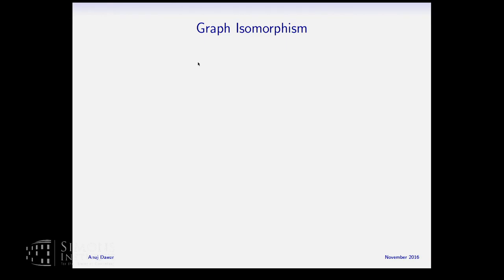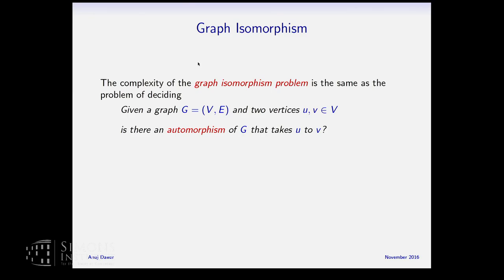Graph isomorphism — we all know what it means to decide it, and it's a problem of great interest because its complexity is somewhat interesting: neither NP-complete nor known to be in P, but now known to be in quasi-polynomial time. From my point of view, graph isomorphism is completely equivalent to the following problem: given a single graph G and two vertices, is there an automorphism of G which takes U to V? I'll freely switch between these two perspectives — from my point of view they're the same problem.